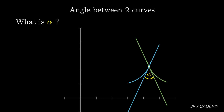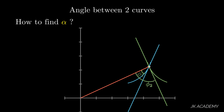Now that we know what alpha is, let's understand how to find it. To find alpha, we consider the radius vector drawn from the origin to the intersection point. The angle between the radius vector and the first tangent is phi1, and the angle between the radius vector and the second tangent is phi2. Alpha is the difference: phi2 minus phi1.